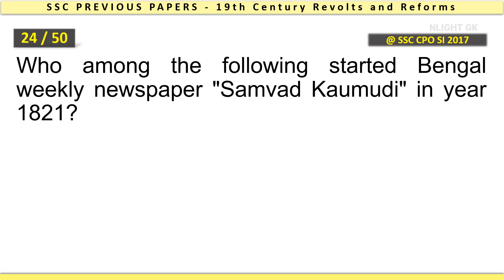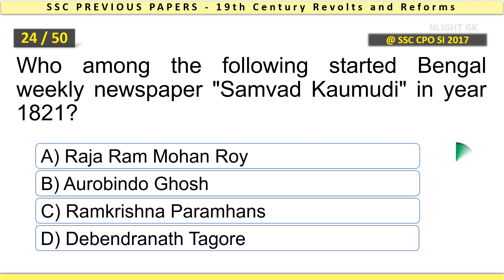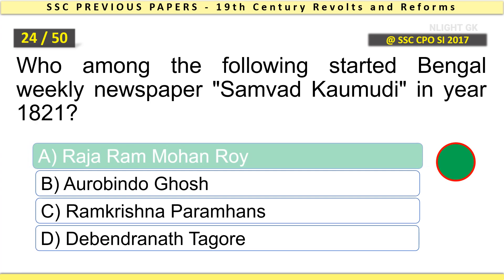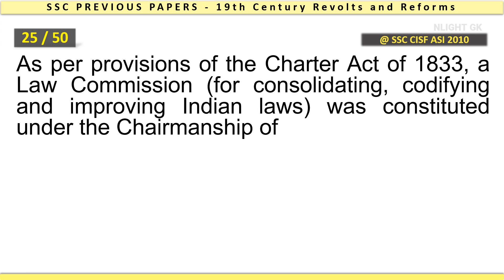Who among the following started the Bengal weekly newspaper Samwad Kaumudi in the year 1821? Raja Ram Mohan Roy.